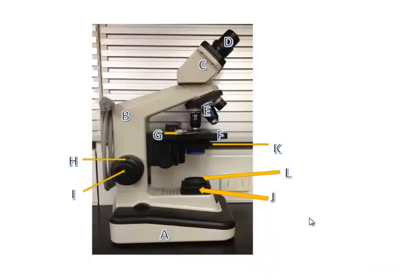In this video we're going to review the parts of the microscope and the functions of those parts. First here we have the base, then we have the arm, and we then have the head or the body tube.